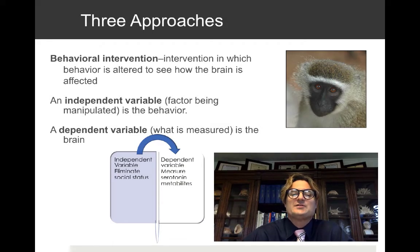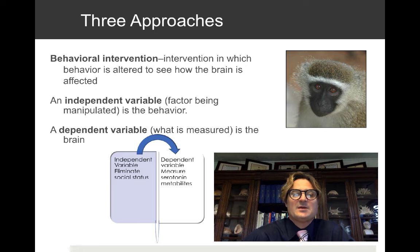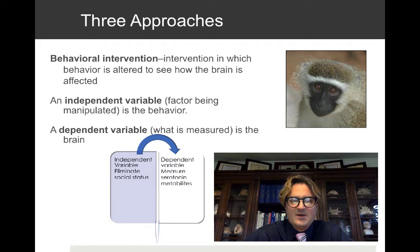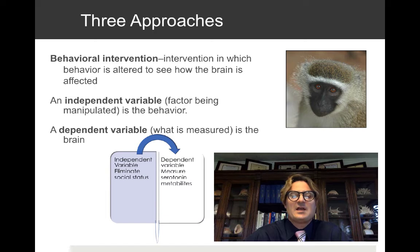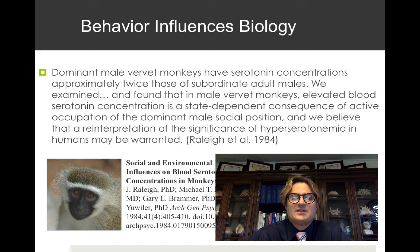A behavioral intervention is one in which behavior is altered to see how the brain is affected. The independent variable is behavior, and the dependent variable we measure is the brain. An example would be eliminating a primate's social status and then measuring changes in its brain. There's a fascinating study done by Raleigh, McGuire, Brammer, and Eweiler that did exactly this.